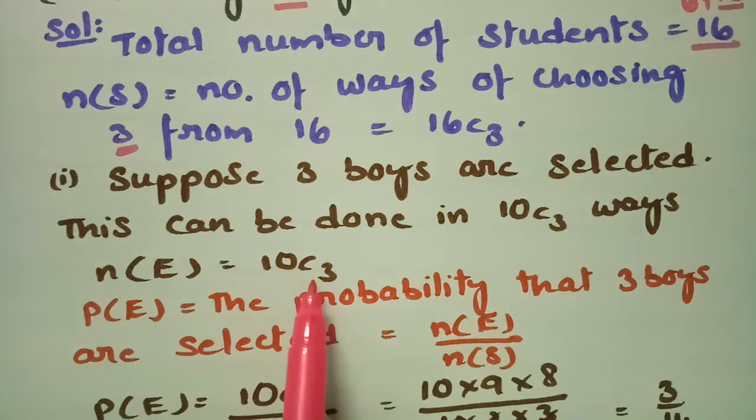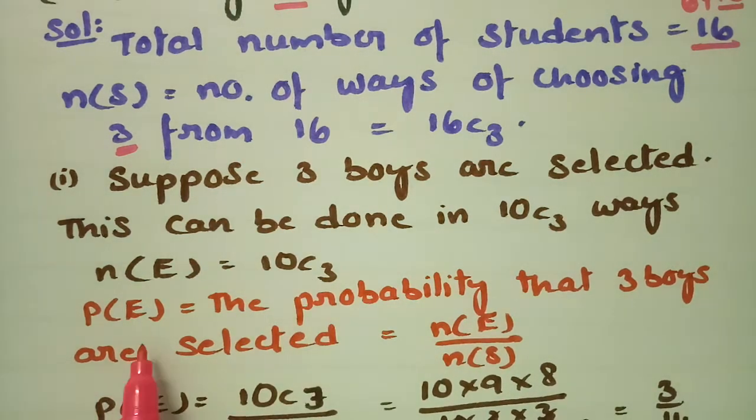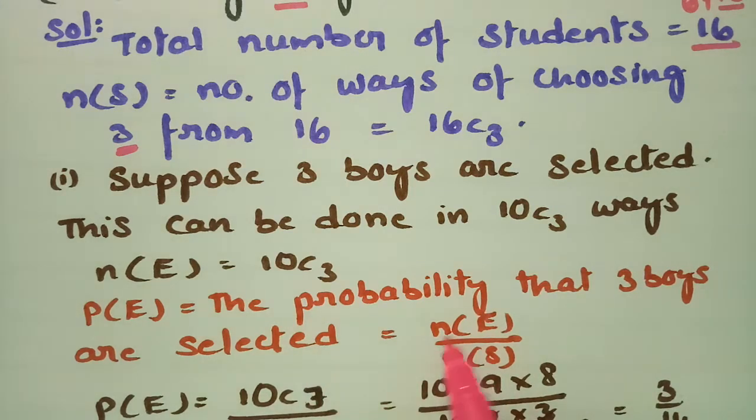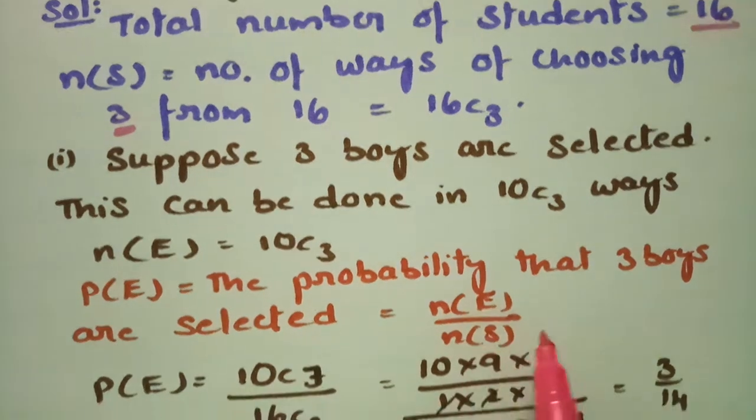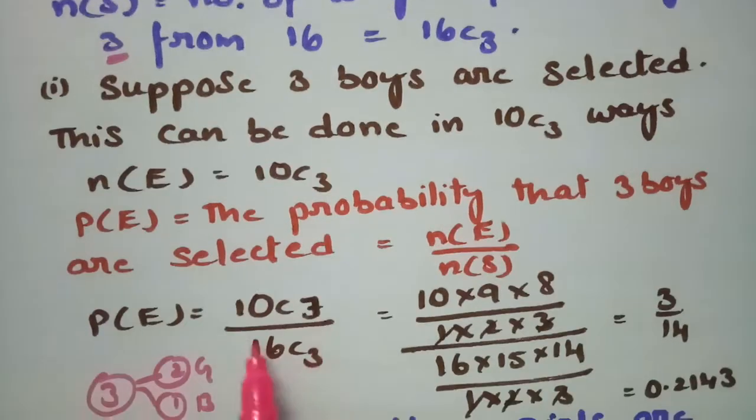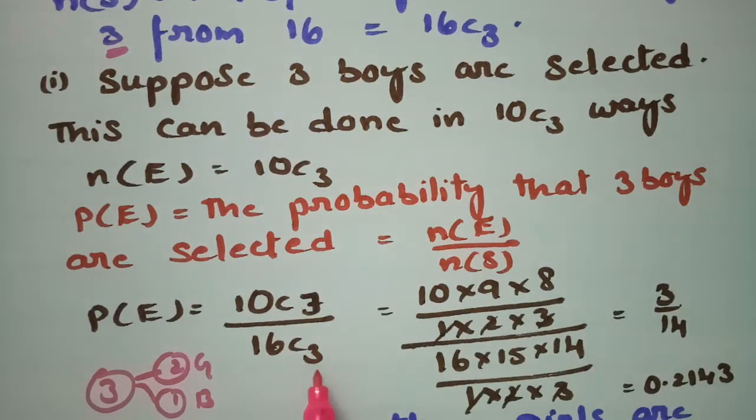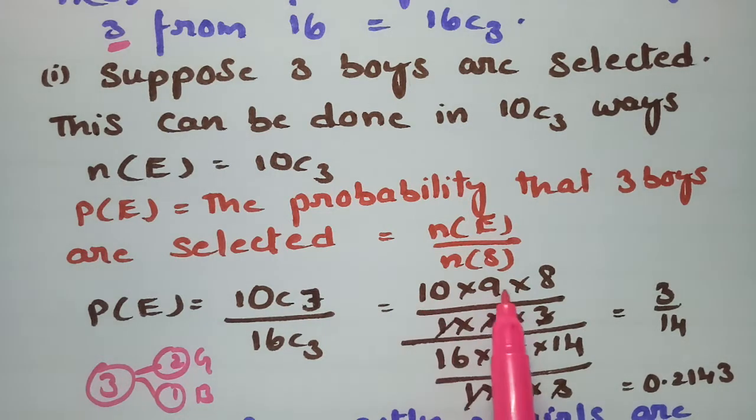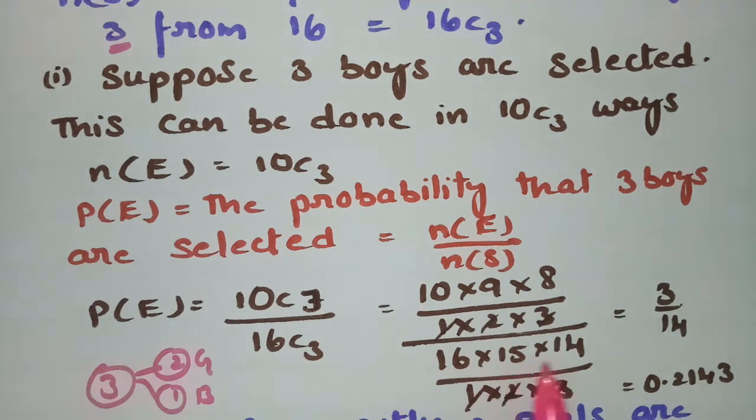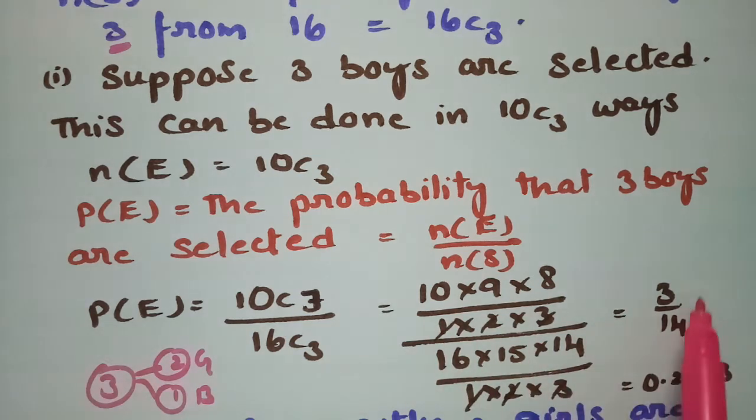P(E), the probability that 3 boys are selected, is n(E) by n(S). n(E) is 10C3 by total 16C3. If I calculate this, that is 10 × 9 × 8 by 16 × 15 × 14. If I cancel all these, the answer is 3/14, which is equal to 0.2143.